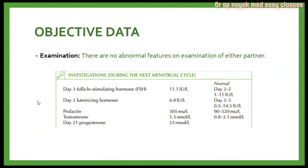Lab parameters were performed during the patient's next menstrual cycle. Her day 3 follicle stimulating hormone is slightly high; day 3 luteinizing hormone is normal; prolactin and testosterone are also normal. However, her day 21 progesterone is less than 30 nanomoles per litre, which confirms that anovulation is present. If a patient has ovulated, the day 21 progesterone should be higher than 30 nanomoles per litre, confirming this patient is suffering from anovulation as the likely cause of her infertility.